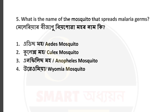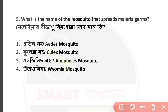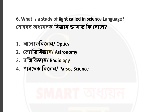What is the level of red blood cells in the human body? This is the number of red blood cells in the human body. Question number 5. Number 6.